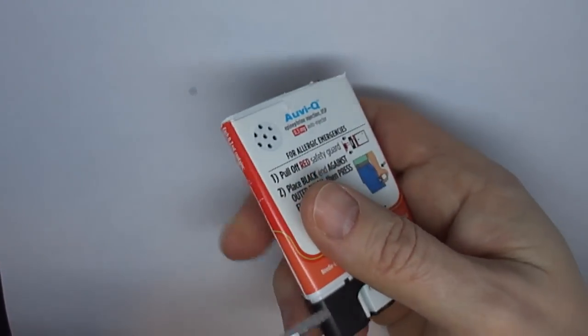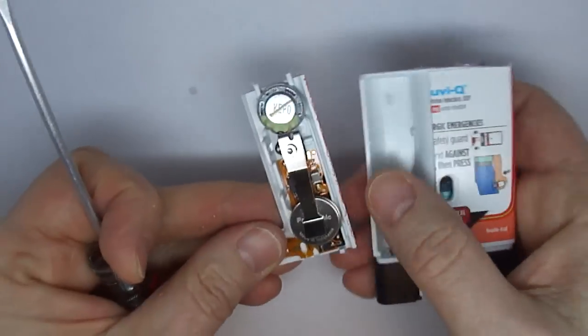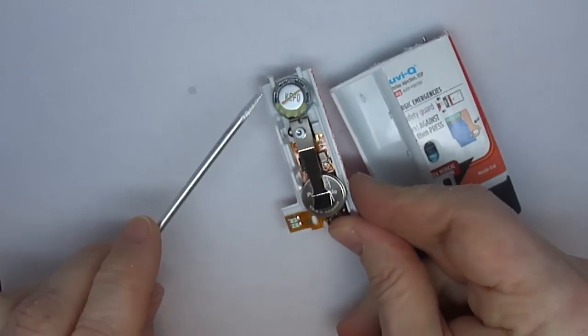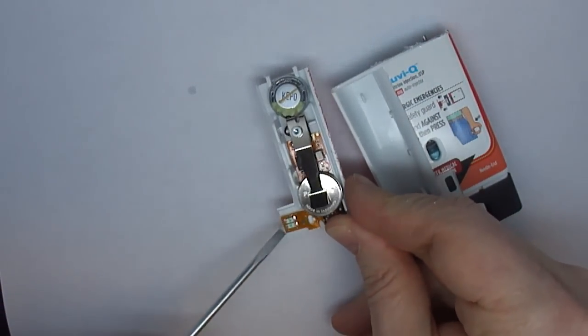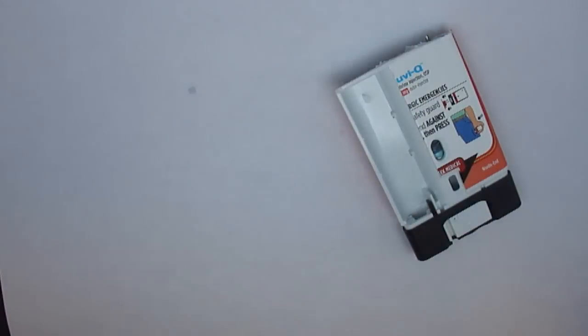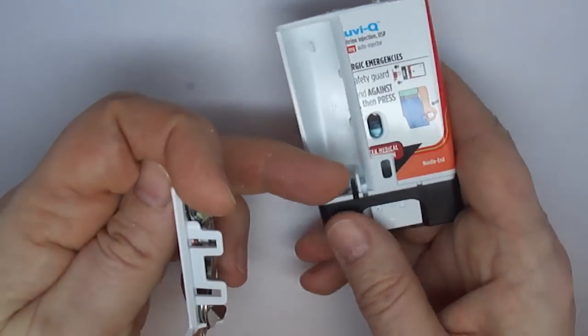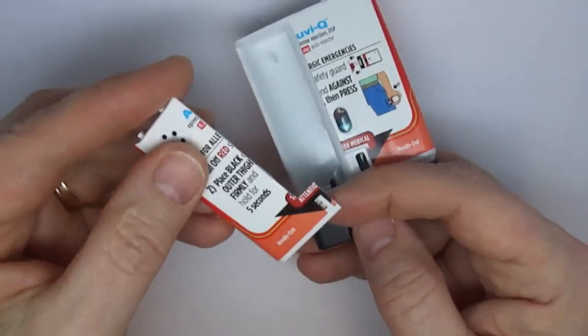The first thing we're going to do is remove that section. This contains a speaker, a circuit board, and the batteries. The only connection between this area and the next area is this little window.